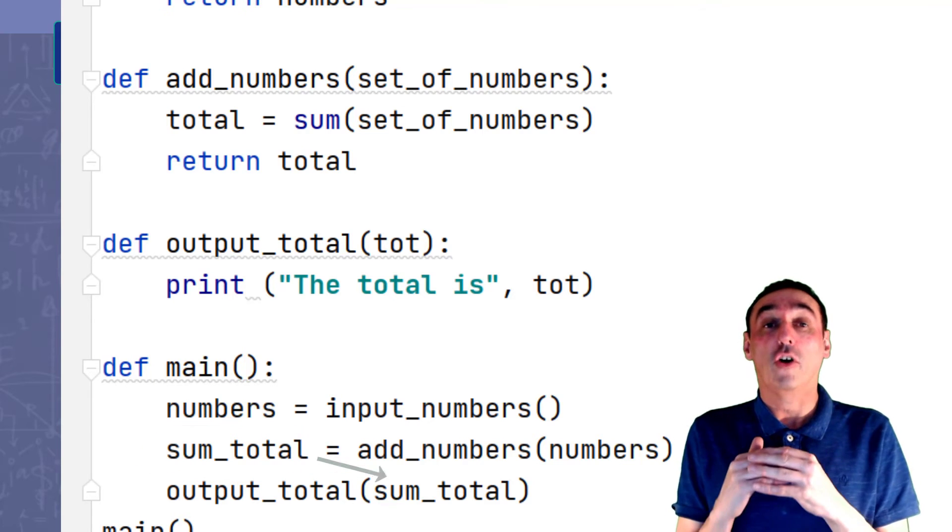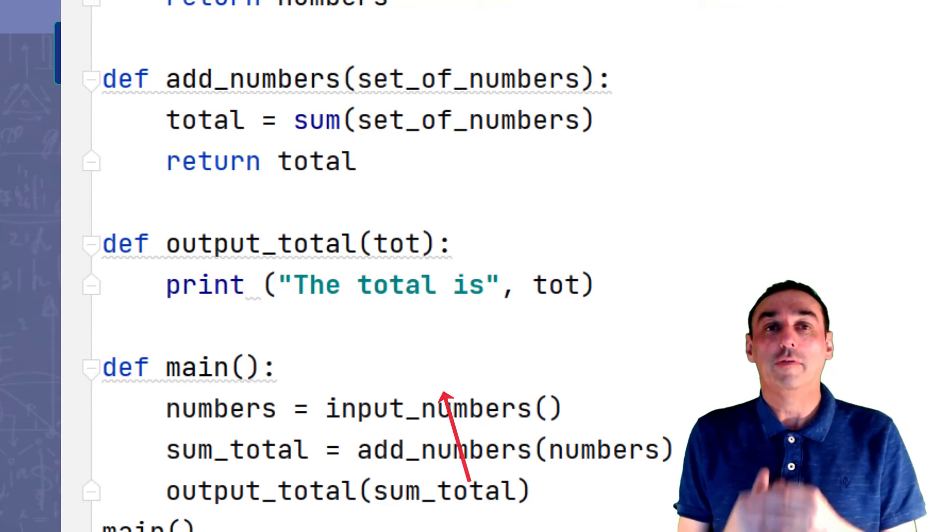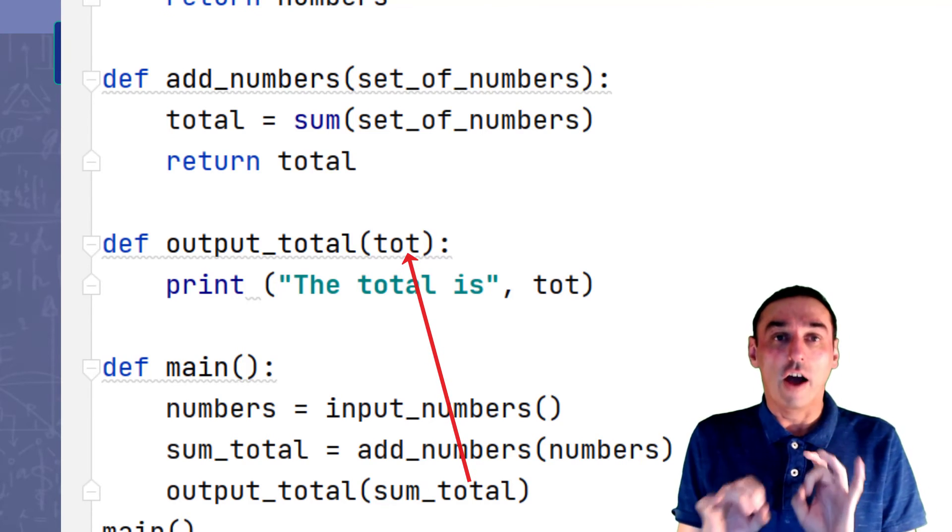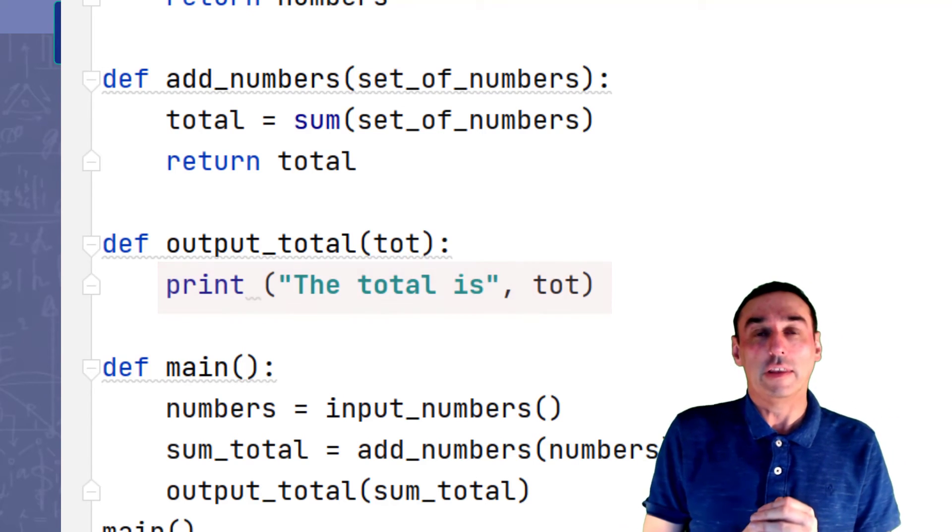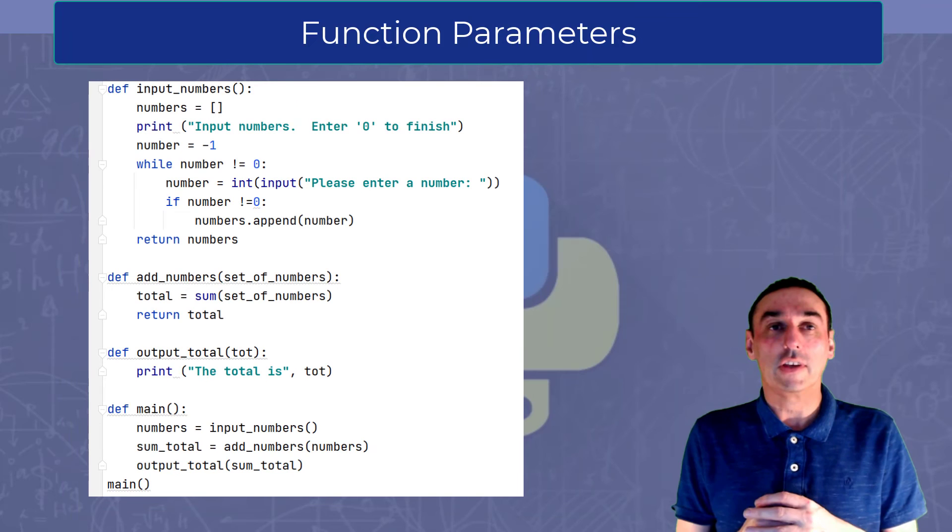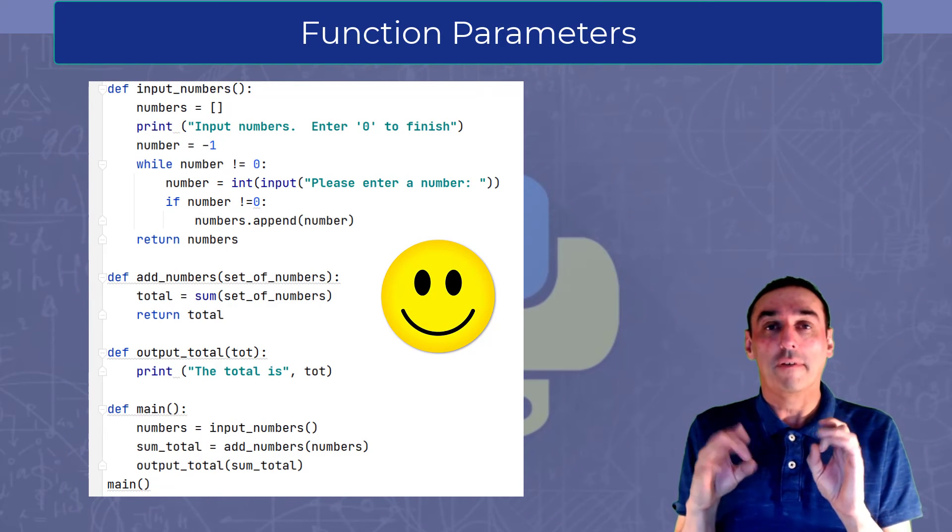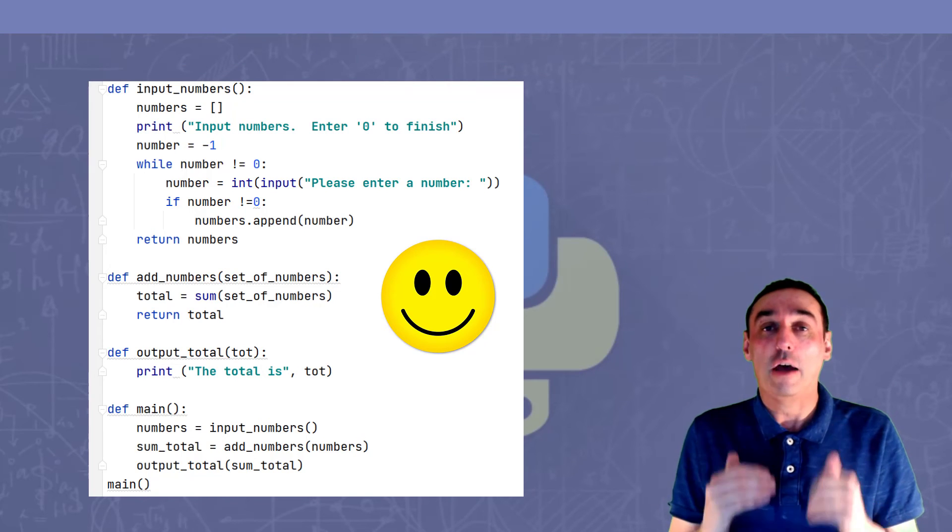Which calls the output_total function, which will in turn run and print out the total, and then we'll finish the program. So as you can see, this is a much better way of removing global variables, so we can see exactly which variables exist within each function and how the variables are returned.